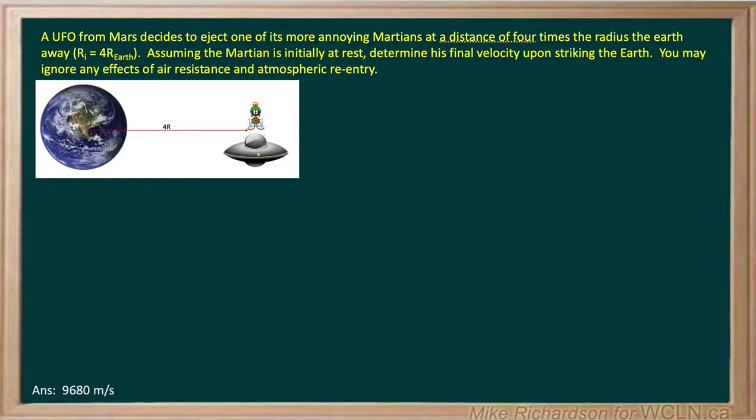Now assuming that he gets ejected starting from rest, so his initial velocity is zero, he's going to start to fall back towards the planet. And we want to know how fast that Martian is going right when he impacts the surface of the planet.